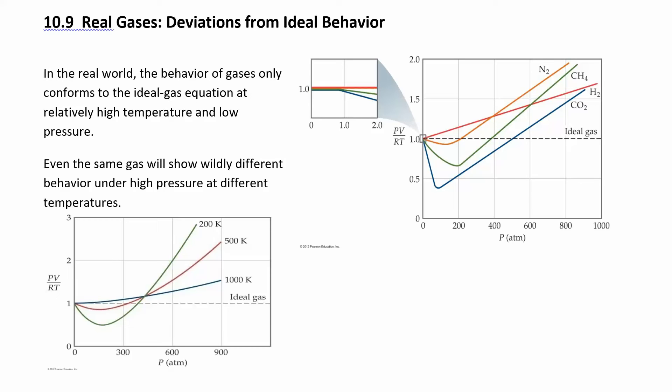So far we've only looked at ideal gases, but in the real world gases behave like real gases, so they're not always ideal. Under what kind of conditions would you see the ideal gas law break down? When does it no longer hold true?